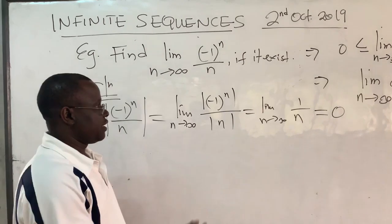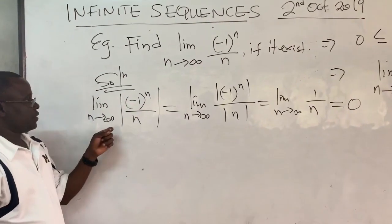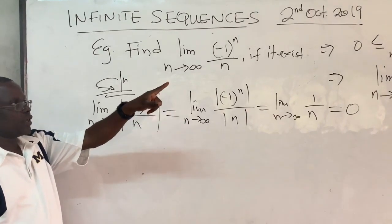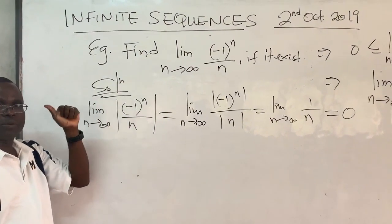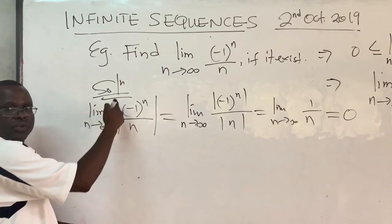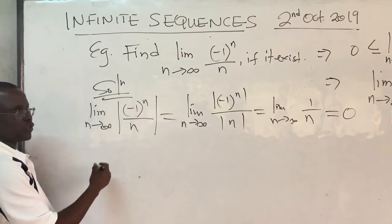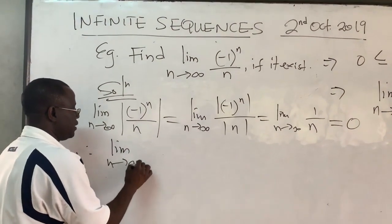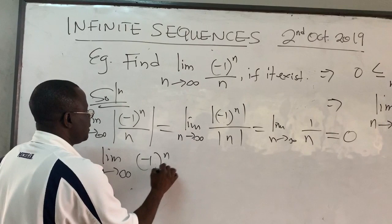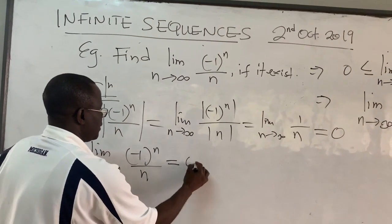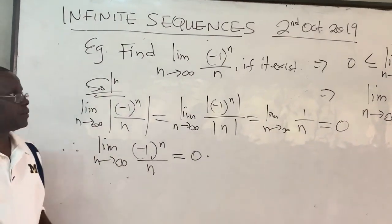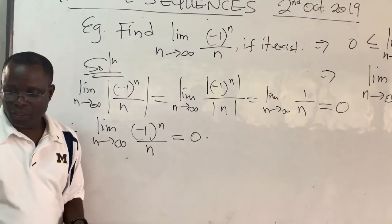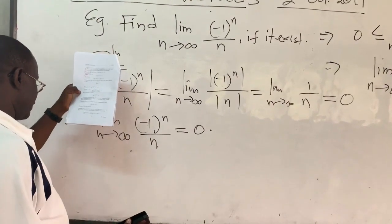Because the limit of the absolute value of this sequence goes to zero, we can use the theorem we proved to show that the limit itself without the absolute value will also go to zero. Therefore, the limit as n goes to infinity of (-1)ⁿ/n is equal to zero, by applying the theorem we proved.